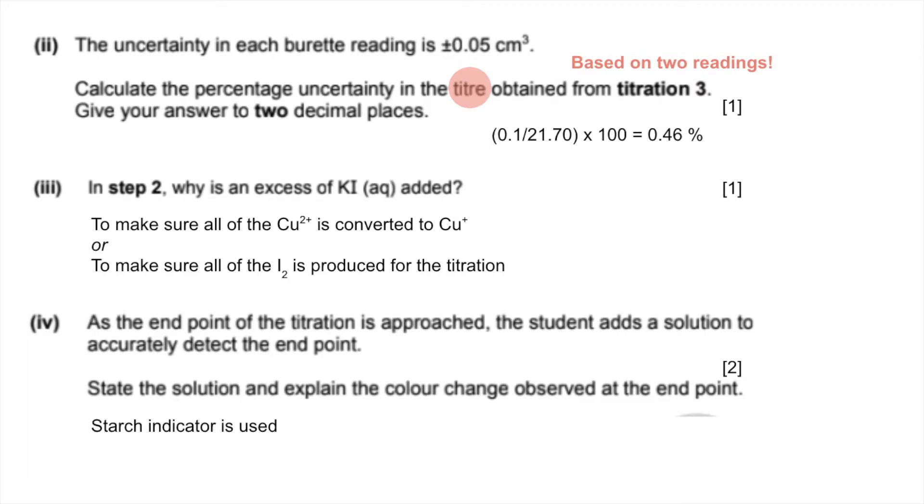If you add starch when there's a little bit of iodine still left (pale yellow color), it goes blue-black. When all the iodine's gone, it goes colorless. The color change for the second mark is blue-black to colorless, which happens when all of the iodine has reacted. You need to say both of those things.